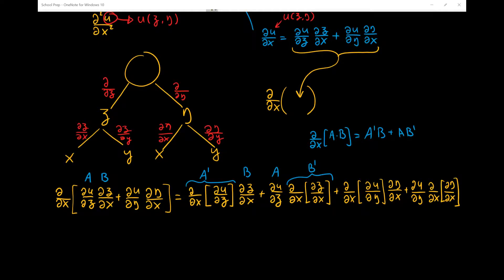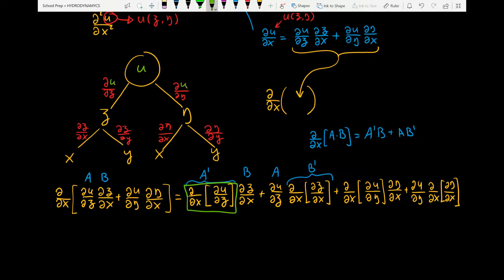Next, we are going to apply the chain rule to take the partial derivative with respect to x of the partial derivative of u with respect to xi. We are going to use a tree diagram for this. Before, in our space holder, we put the function of u. In general, we can put any function in there, even another derivative.